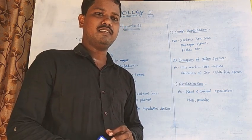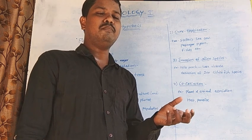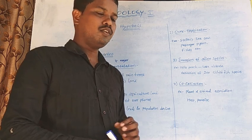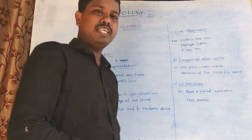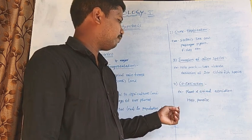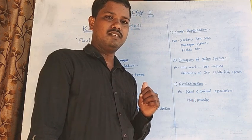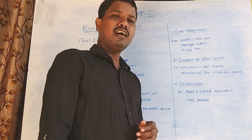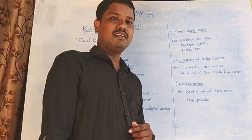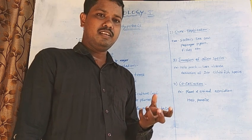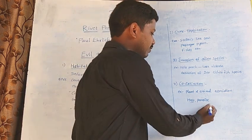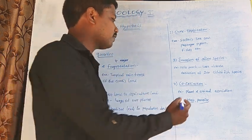The fourth cause is co-extinction. If one species is destroyed, this affects another species that depends on it. For example, when a plant goes extinct, the animal associated with it also goes extinct. Similarly, parasites depend on their host for shelter, food, and reproduction — so when the host goes extinct, the parasite also goes extinct. This process is called co-extinction.